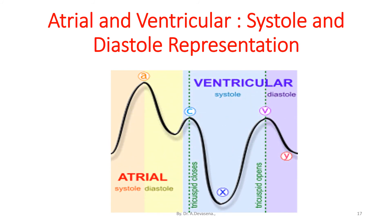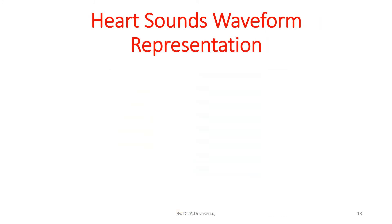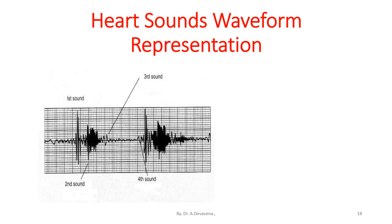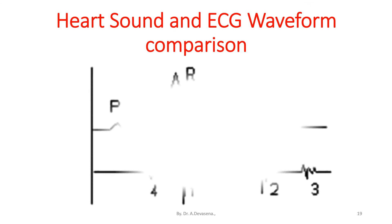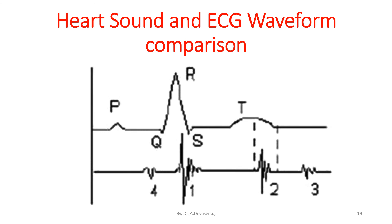Here is a representation of atrial and ventricular systole and diastole — that is, the contraction and expansion of both the atrium and ventricle of the heart chambers. The heart sounds waveform representation is shown below, displaying the first, second, third, and fourth heart sounds. A comparison of both the ECG waveform and heart sound waveforms is also shown here.